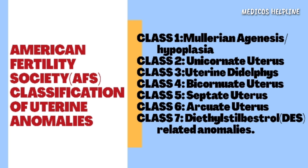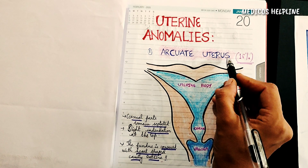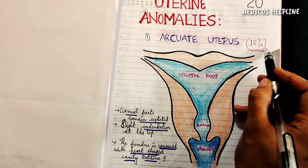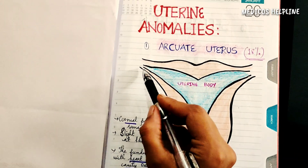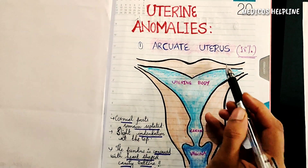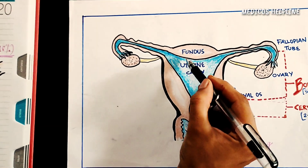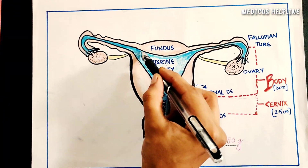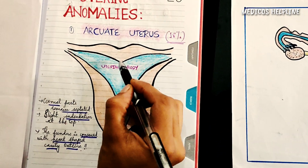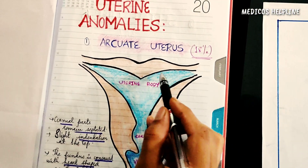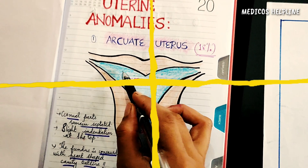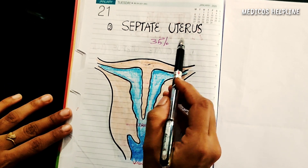First, coming to the arcuate uterus — the arcuate uterus forms about 18% of all uterine anomalies. Here, during the fusion of the Müllerian ducts, there is a slight indentation into the uterine body. In the normal uterus, the cavity outline is smooth and the fundus is dome-shaped, whereas here there is a slight indentation at the top — the fundus is concave with a heart-shaped cavity outline.